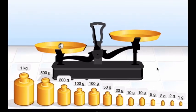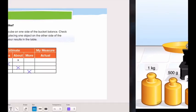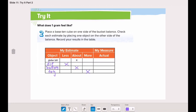Let's start with the die. Place one gram on one side of the scale and the die on the other. The die is actually more than one gram! Let's go back to the activity and write that it is more than one gram.